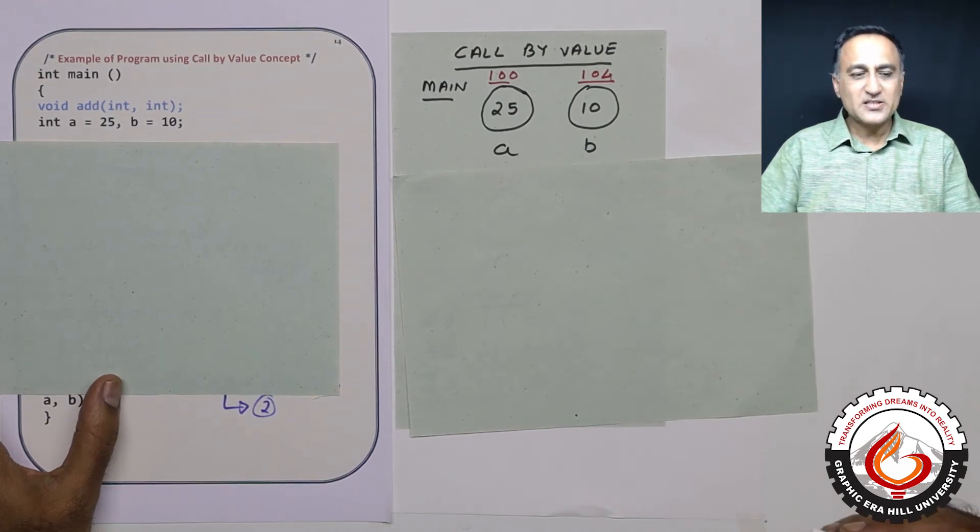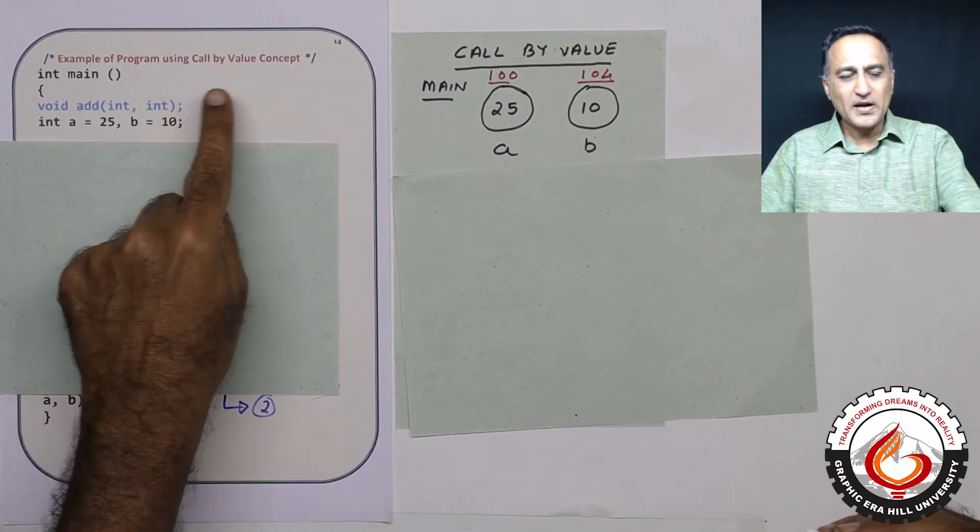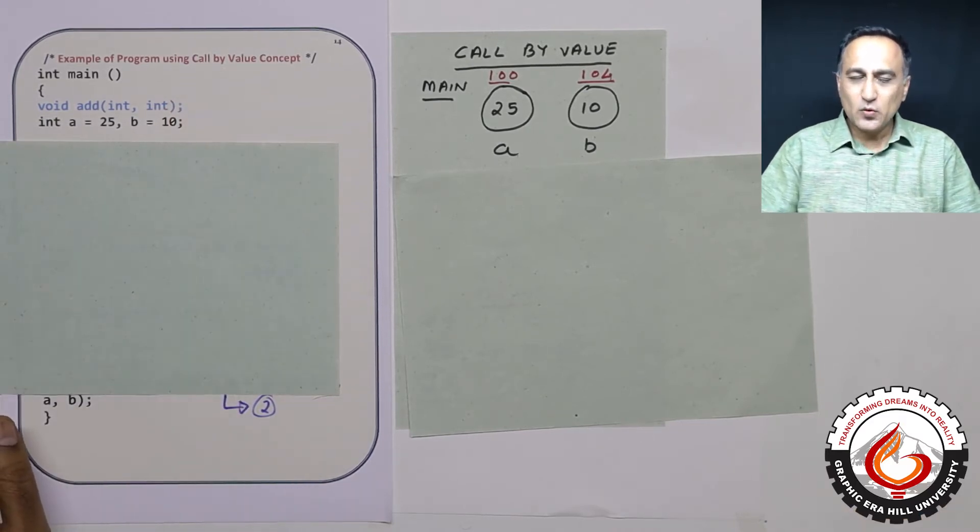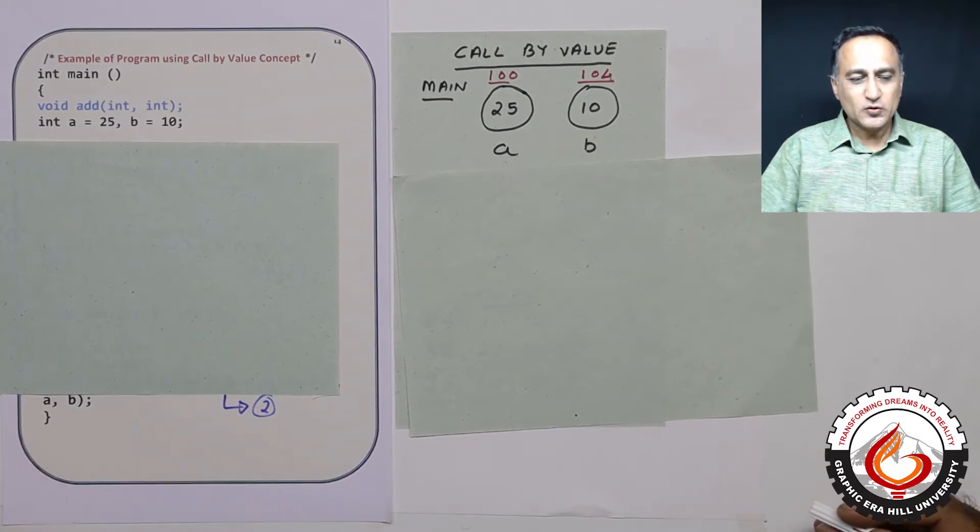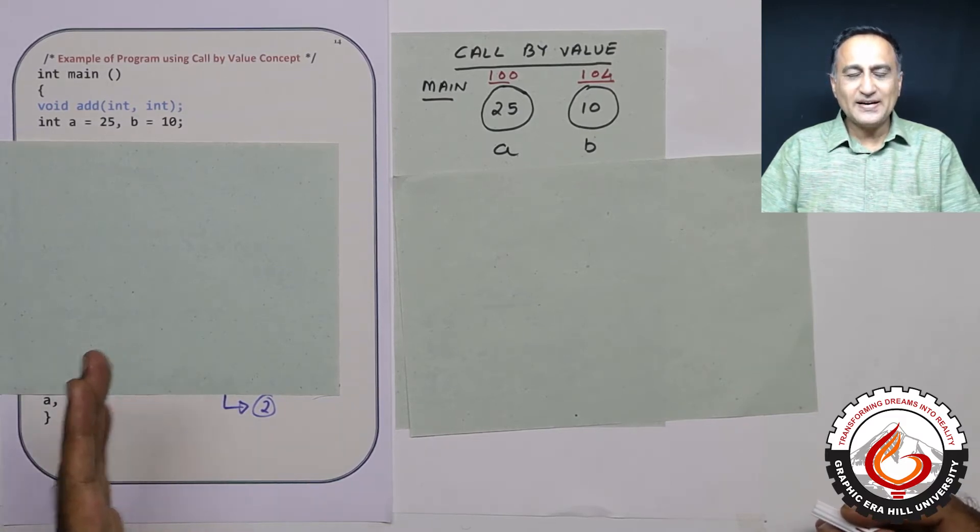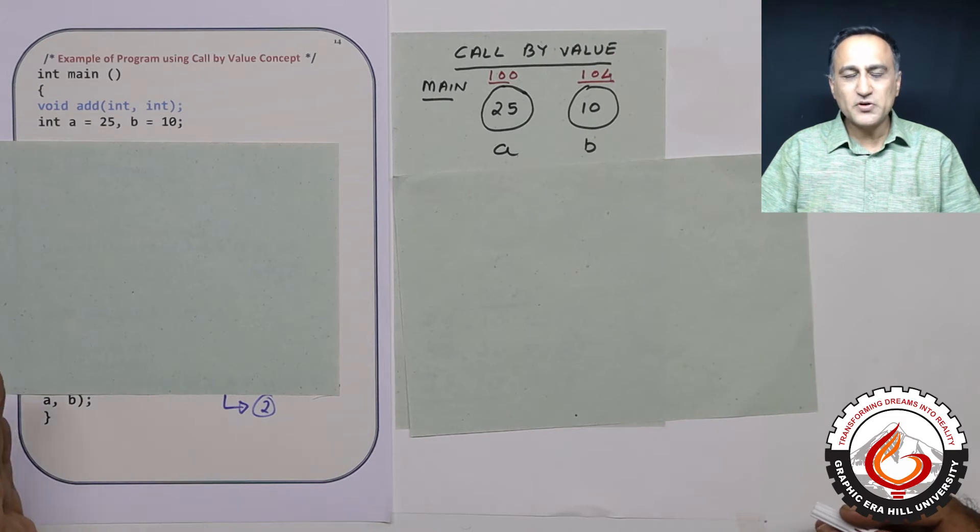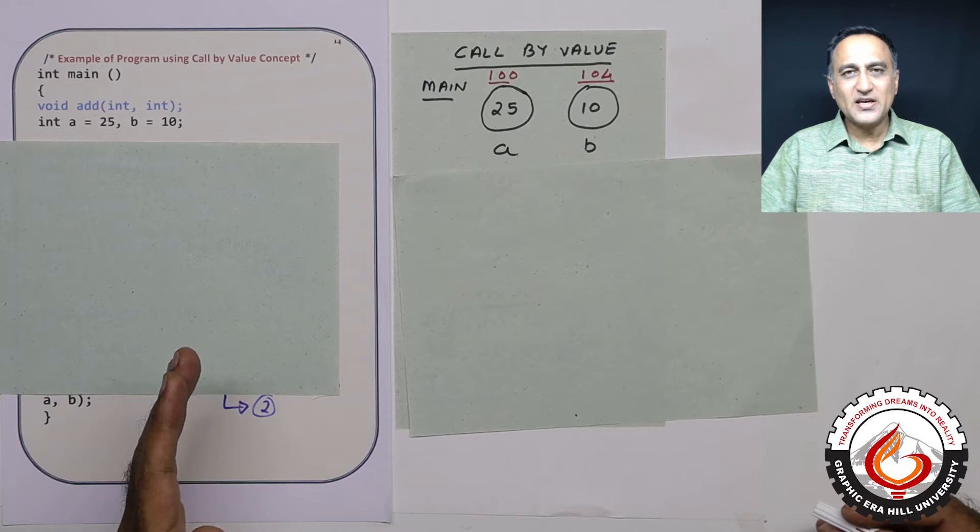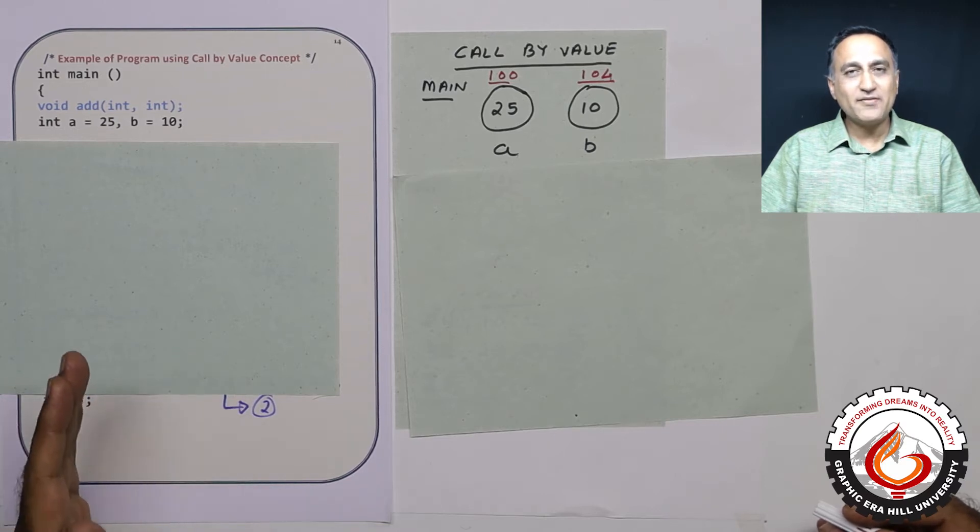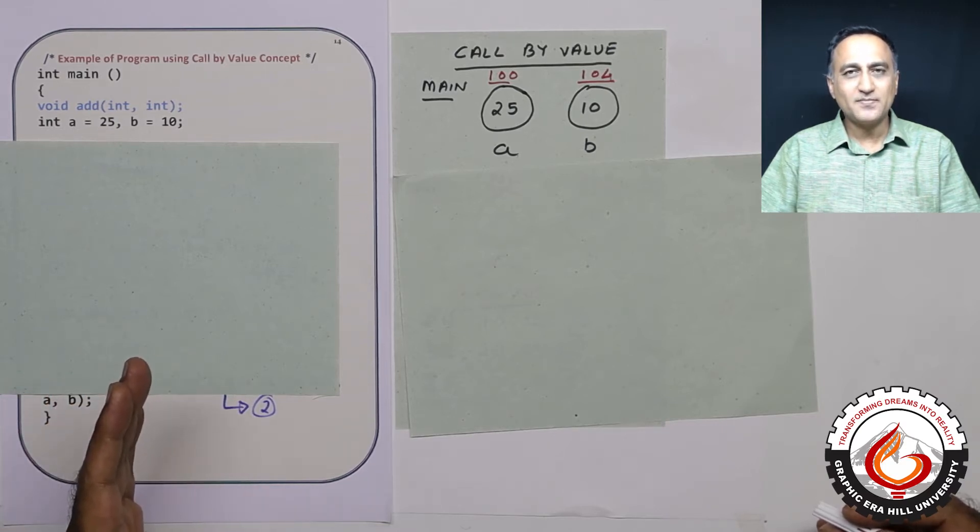The first mechanism is called call by value, which is the only one we have used so far. In this and the next session, I'll explain what call by value is, which we've been doing so far, and then what is call by address, which we shall be utilizing heavily in the future starting from now onwards.